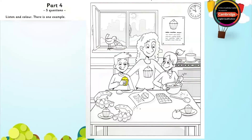Now listen to part four again. One. Can you colour the cake next to the apple now? The cake next to the apple? What colour? Colour it blue. OK. There. Thank you.